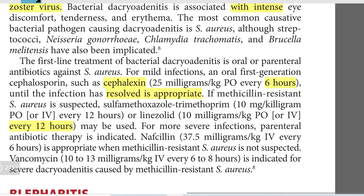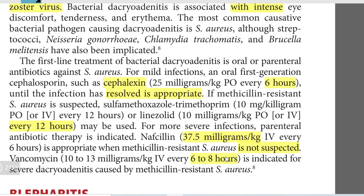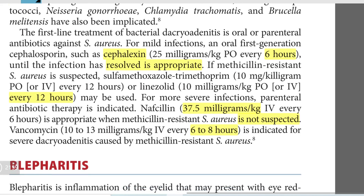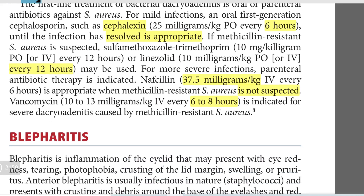For more severe infections, parenteral antibiotic therapy is indicated. Nafcillin 37.5 mg per kg IV every six hours is appropriate when MRSA is not suspected. Vancomycin 10 to 13 mg per kg IV every 6 to 8 hours is indicated for severe Dacryoadenitis caused by methicillin-resistant Staph aureus.